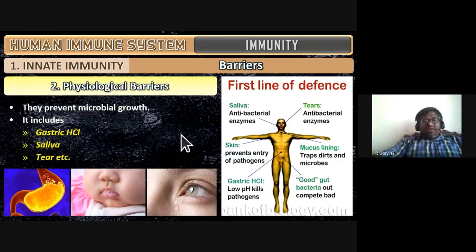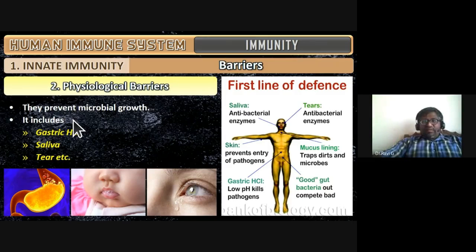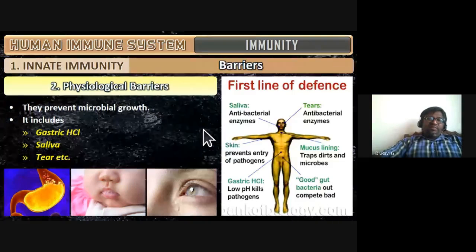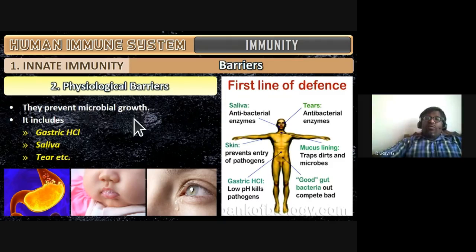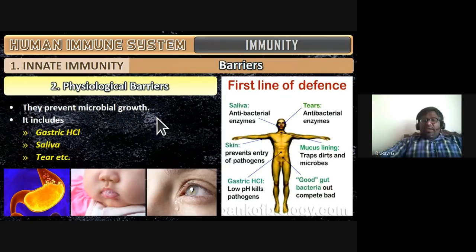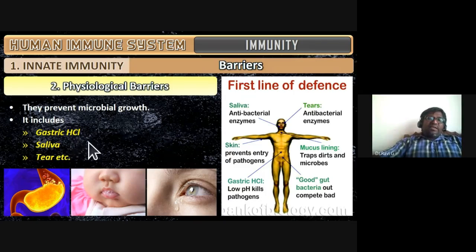Physiological barriers prevent microbial growth and include gastric HCl, saliva, and tears. So while the physical barrier is the skin, physiological barriers are gastric HCl, saliva, and tears.